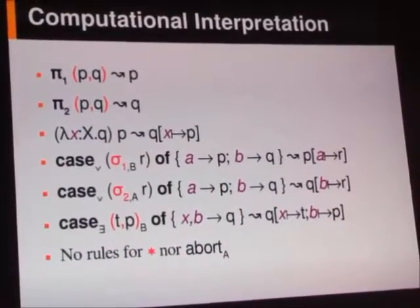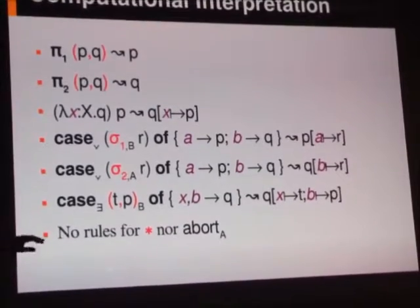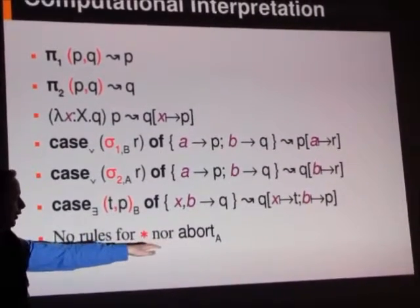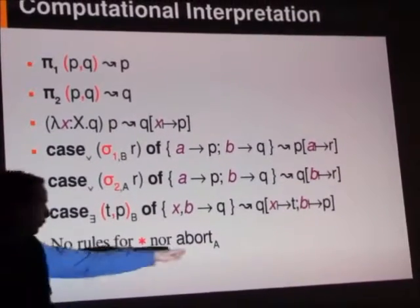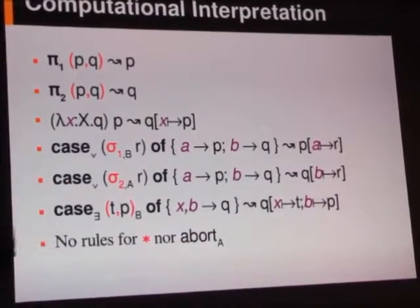And similarly for elimination existential, there are no complication rules for splat, which is a proof of truth, nor for abort, which is the deduction from false.